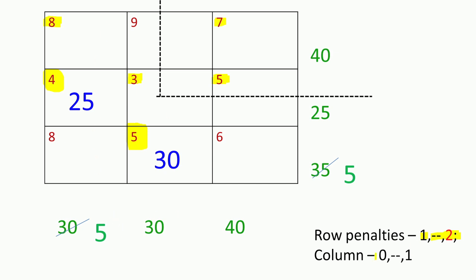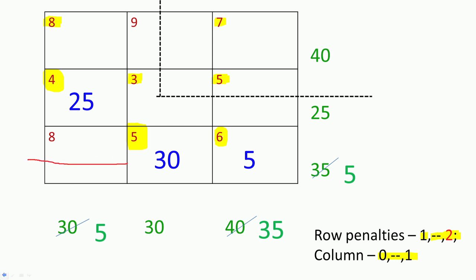Identify the minimum cost position in row 3 and try to put as much as you can there to avoid the penalty. The available supply is 5 and the requirement is 40, so we put the minimum of 5 and 40, which is 5. By putting this 5, this entire supply is consumed. The remaining requirement becomes 35. We will not put anything more in that row's other position, as it is entirely consumed.